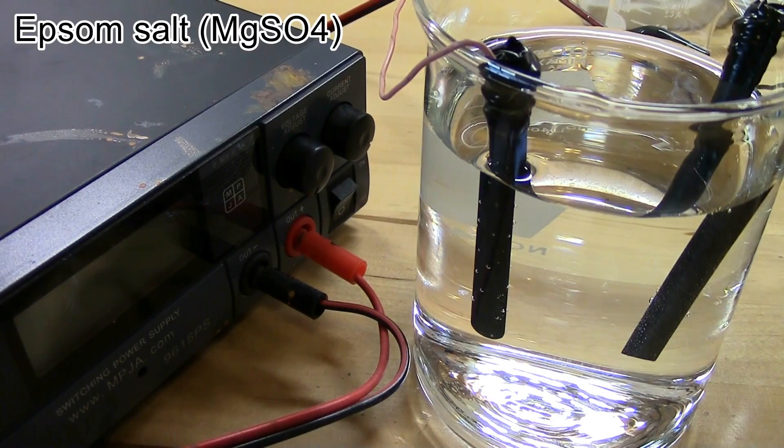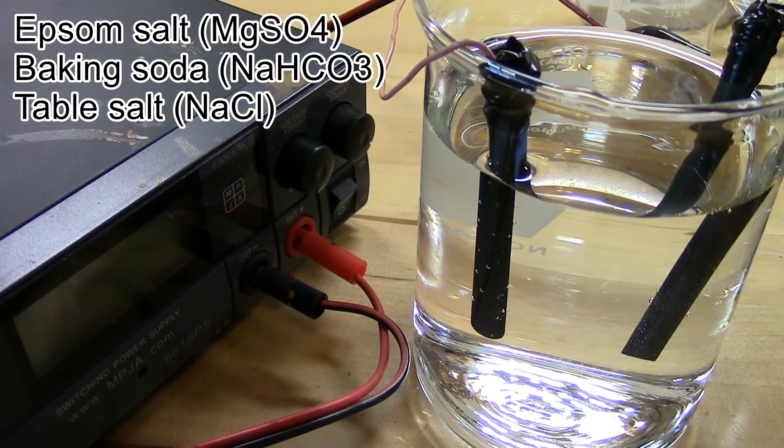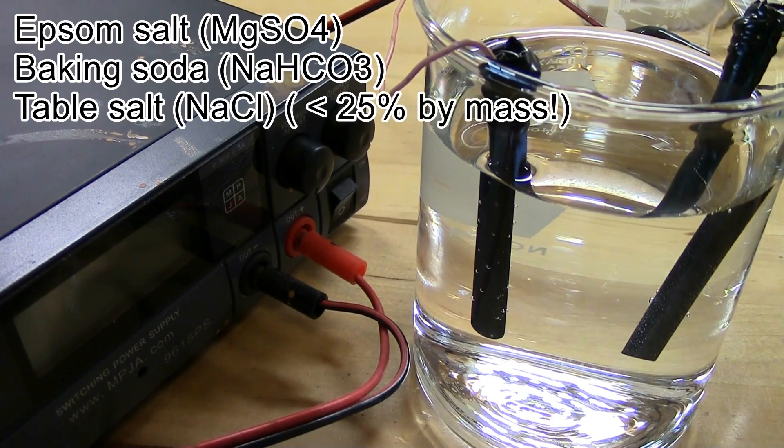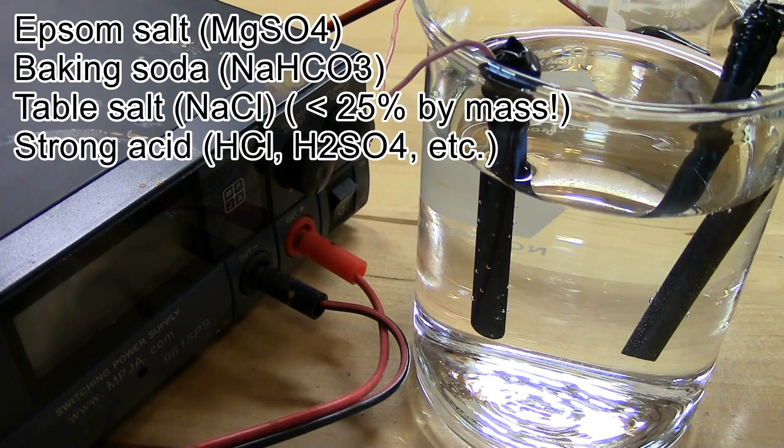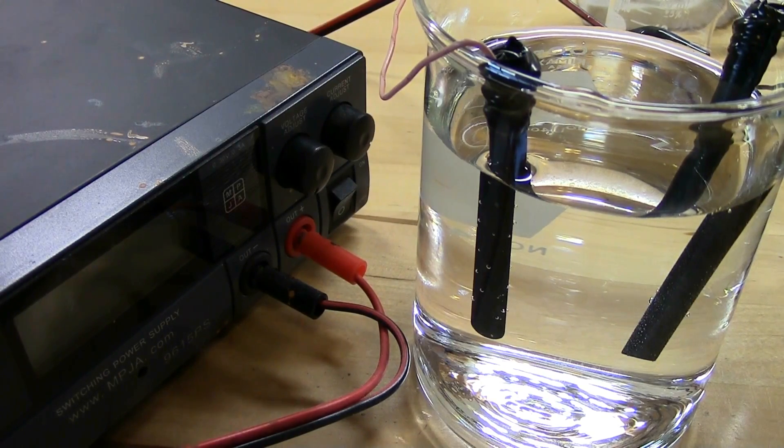You can use Epsom salt (magnesium sulfate), baking soda (sodium hydrogen carbonate), or regular table salt with a caveat. If you use too much table salt, it'll start electrolyzing that and you'll get chlorine instead. You can also use strong acids or strong bases. I'm going to use a strong acid since we have it already.